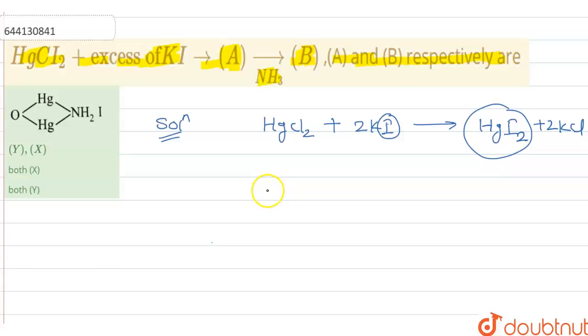And further HgI2 is treated with two moles of potassium iodide because potassium iodide is in excess. Potassium iodide is in excess here.